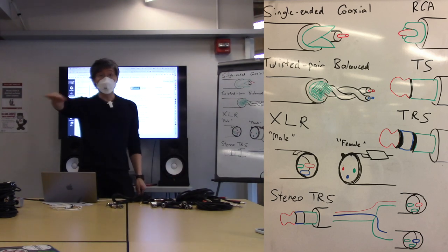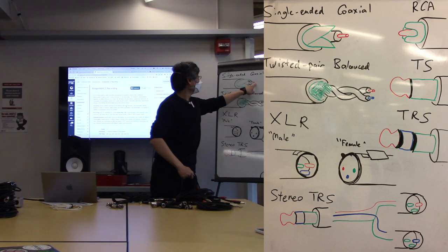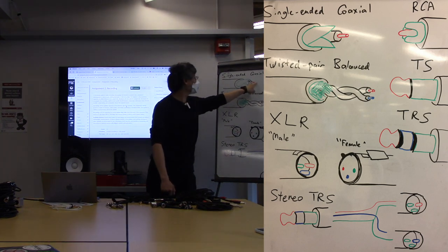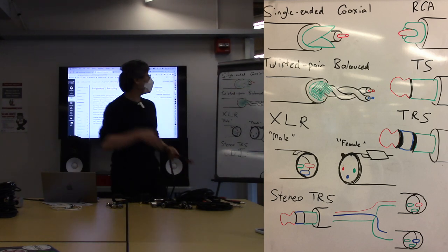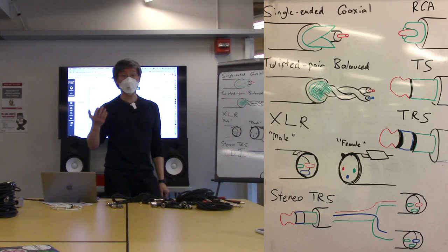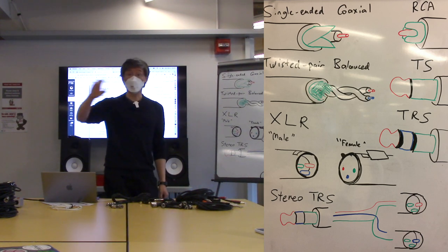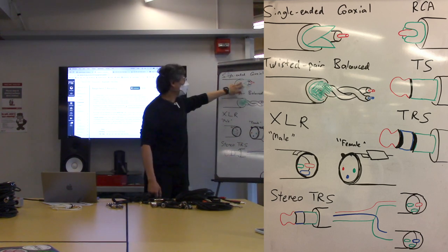It also establishes a base reference level, which is measuring the signal that's actually coming through this one single conductor in the middle. If this is going positive or negative, it's comparing it against this shield to figure out should the speaker be going out or should the speaker be going in.